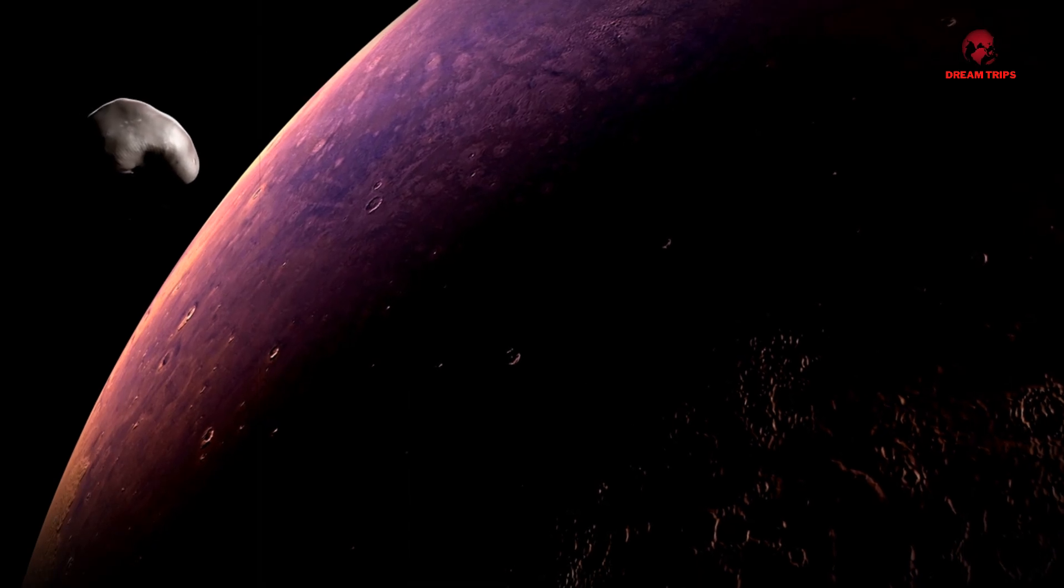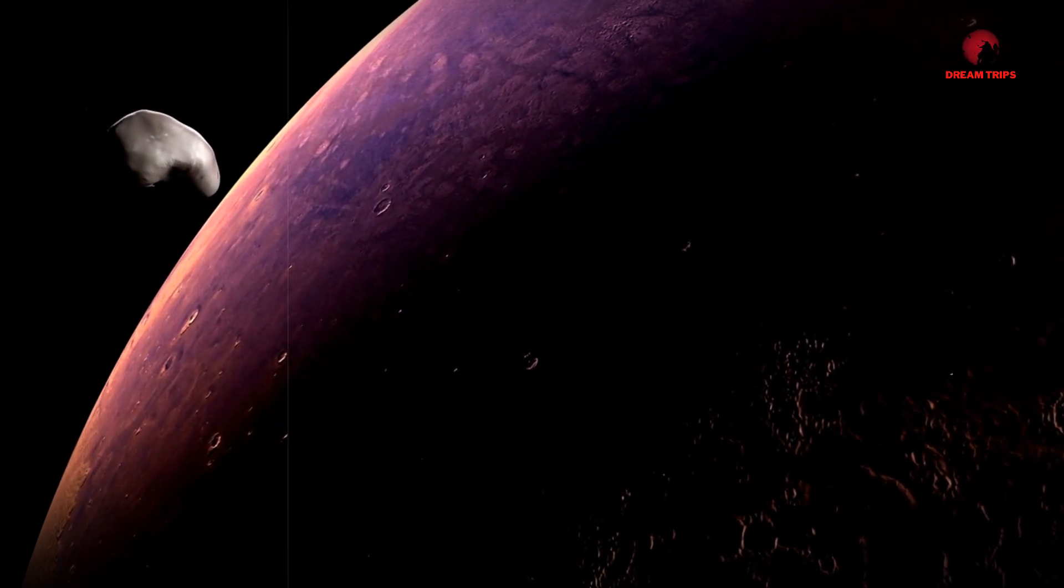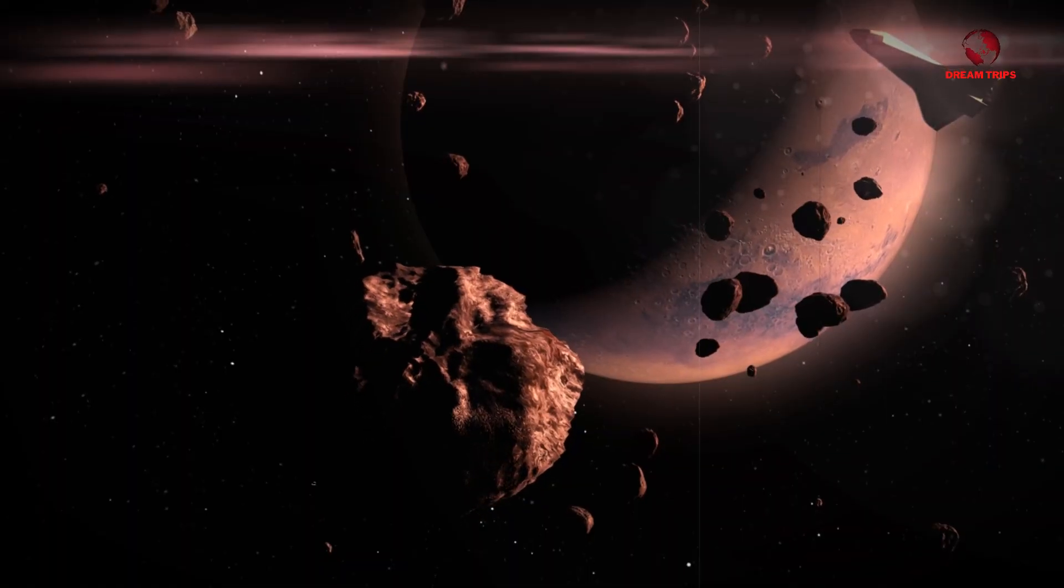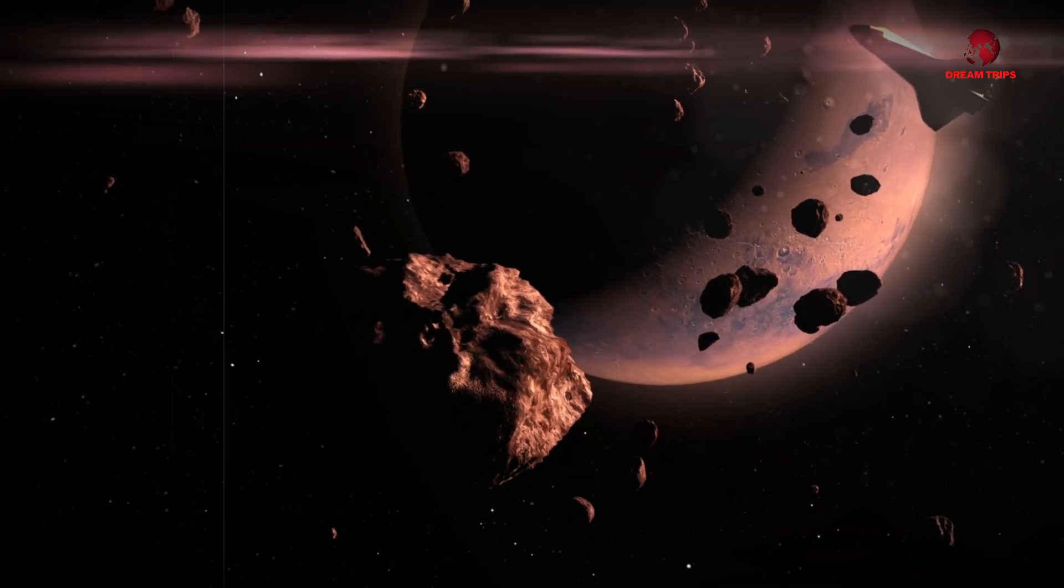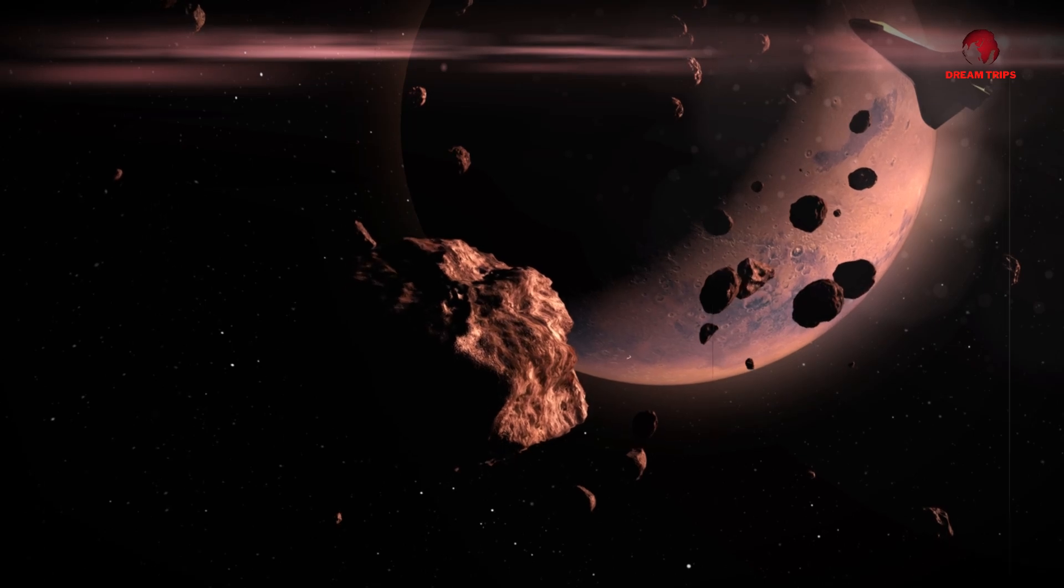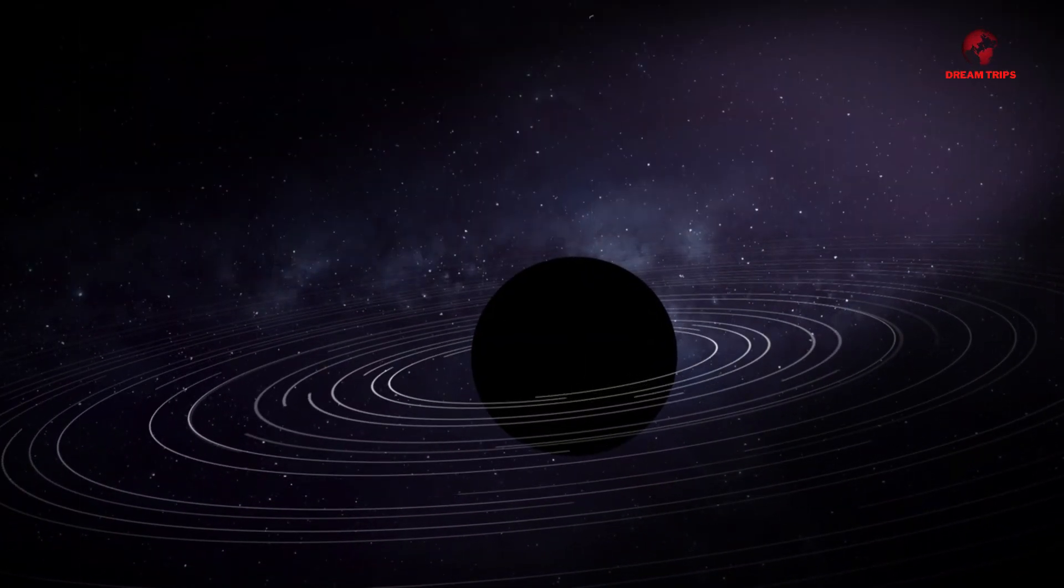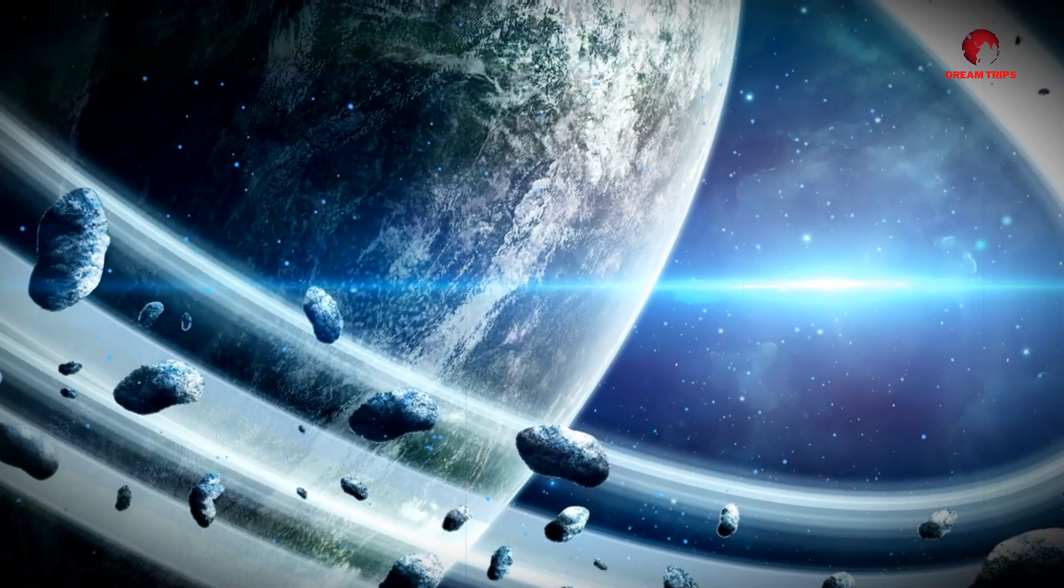The Kuiper Belt contains a variety of celestial bodies. Notable examples include the dwarf planets Pluto, Eris, Haumea, and Makemake. These five dwarf planets are comparable in size to the classical planets, but they do not dominate their orbits.